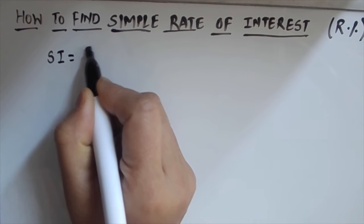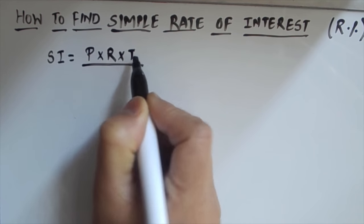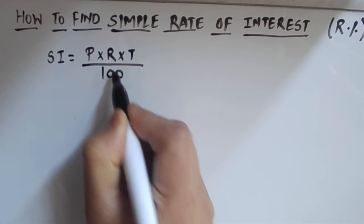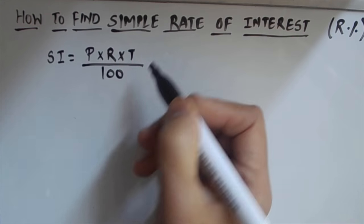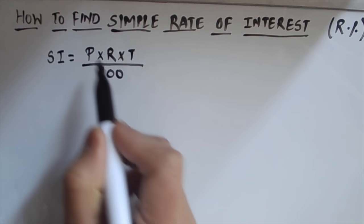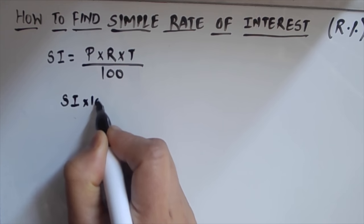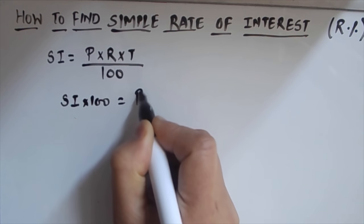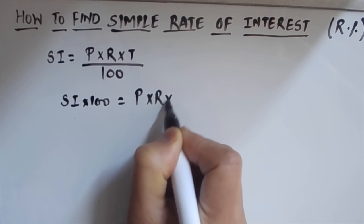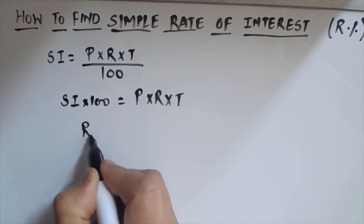is principal amount times rate of interest times time period over 100. So first of all, we will find the formula to find the rate of interest from this formula. We can write this as simple interest times 100 is equal to P times R times T.